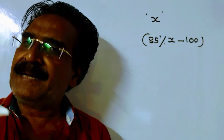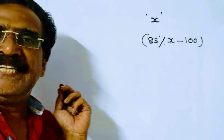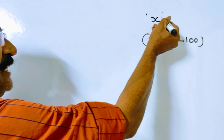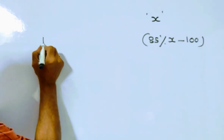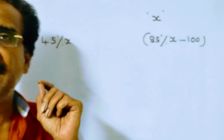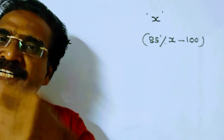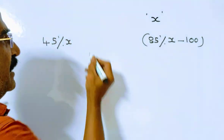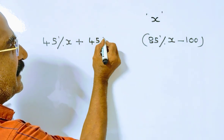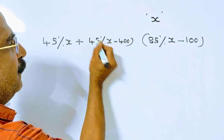The votes polled by the winning candidate is given as 45% of the total number of votes, that is 45% of X. The winning candidate won the election by a majority of 400, so the losing candidate gets 45% of X minus 400.